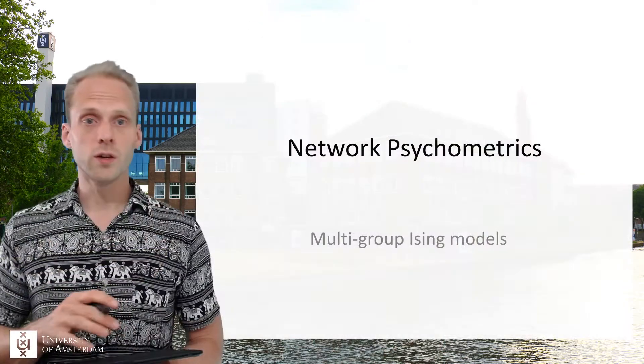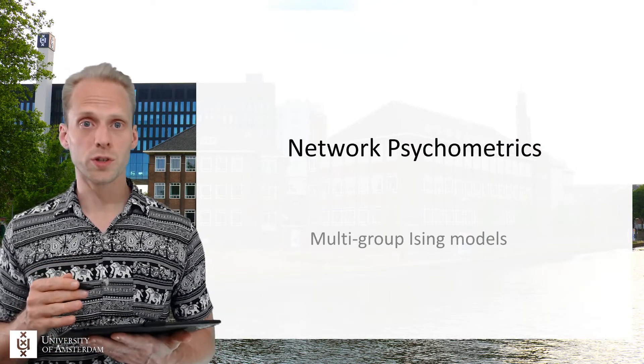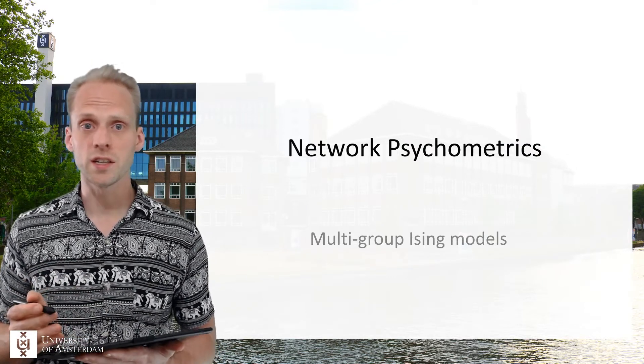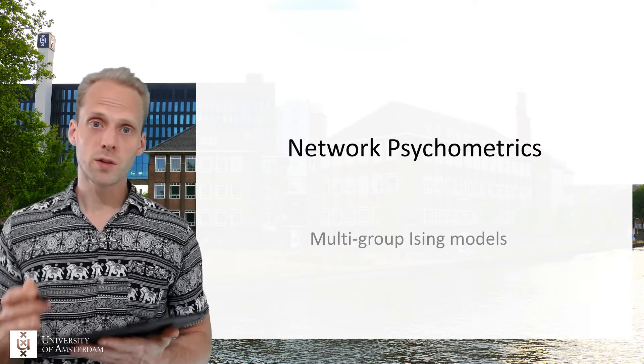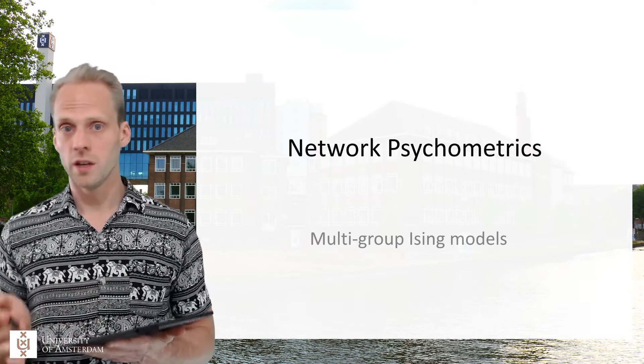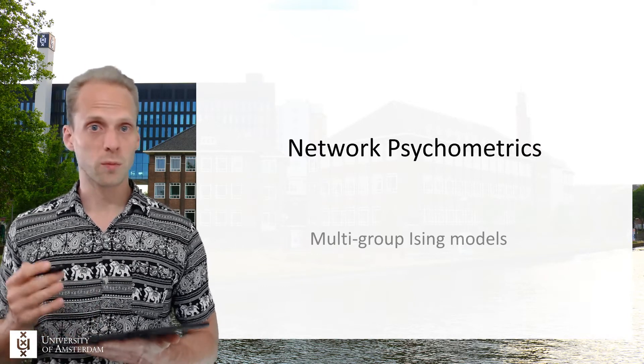In this video I want to show another powerful thing you can do by casting network modeling in the same way as we have previously been doing factor modeling, such as structural equation models. And that is by using multi-group models. In structural equation modeling you can use multi-group models to test for homogeneity between parameters across groups, and we can do the same in network models - we can test if two edges are equal across groups using a multi-group comparison.